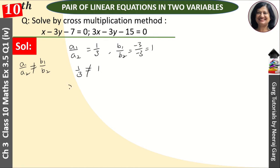I told you earlier that here is x, here is y, and here is 1. And I told a rule: 2, 3, 1, 2 — that is what we use. 2 means the y coefficient. Here it is minus 3 and minus 3.